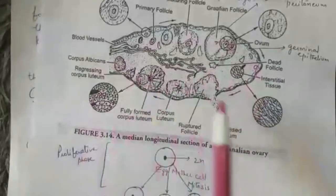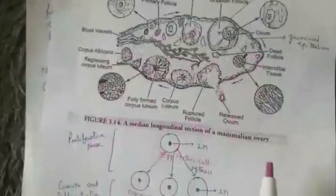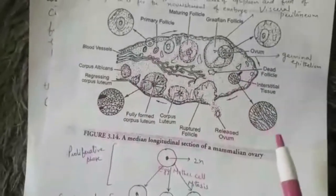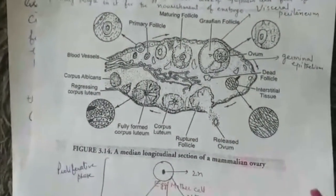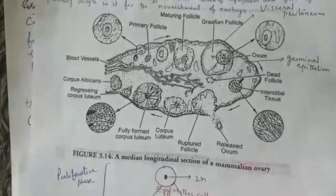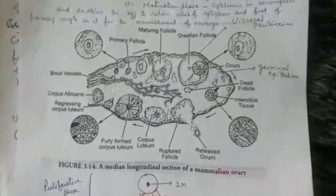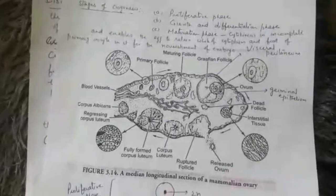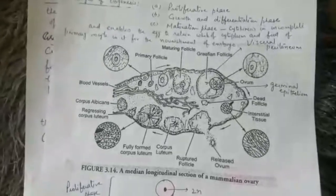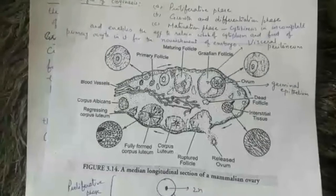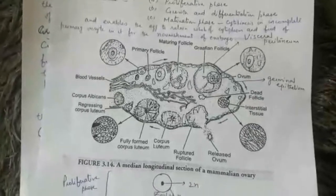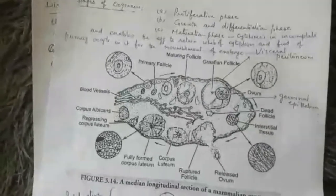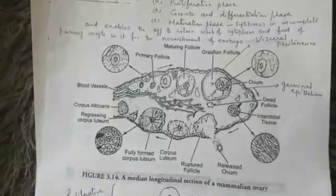This covers the process of oogenesis. Oogenesis contributes a haploid maternal set of chromosomes in the form of the egg. Besides this, the egg stores a large amount of yolk as food for the development of the embryo. This is the significance of oogenesis.